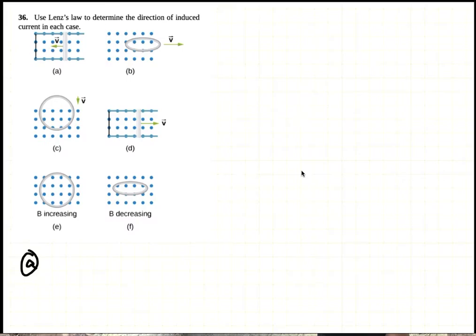So the induced current should try to increase the flux. Since the flux is decreasing, you want to produce a flux coming out of the paper. The current has to flow counterclockwise, which will produce a flux coming out of the paper. So for part A, the current is counterclockwise.